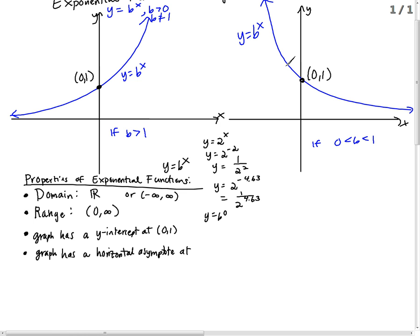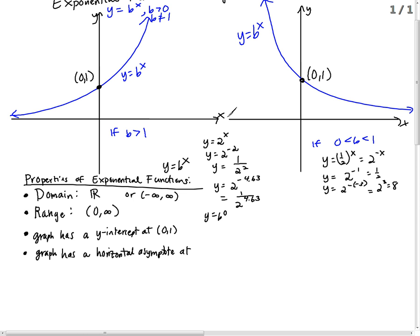Same thing on this side. If b is a fraction, say y is 1 half to the x, or 2 to the negative x — if I plug in 2 to the negative 1, I get 1 half. If I put in negative 3, that becomes 2 to the positive 3, I get 8. To get y values closer to 0, x moves further to the right. But in both cases, y will never cross the x-axis, or the line y equals 0. So the graph has a horizontal asymptote at y equals 0, which is the x-axis.